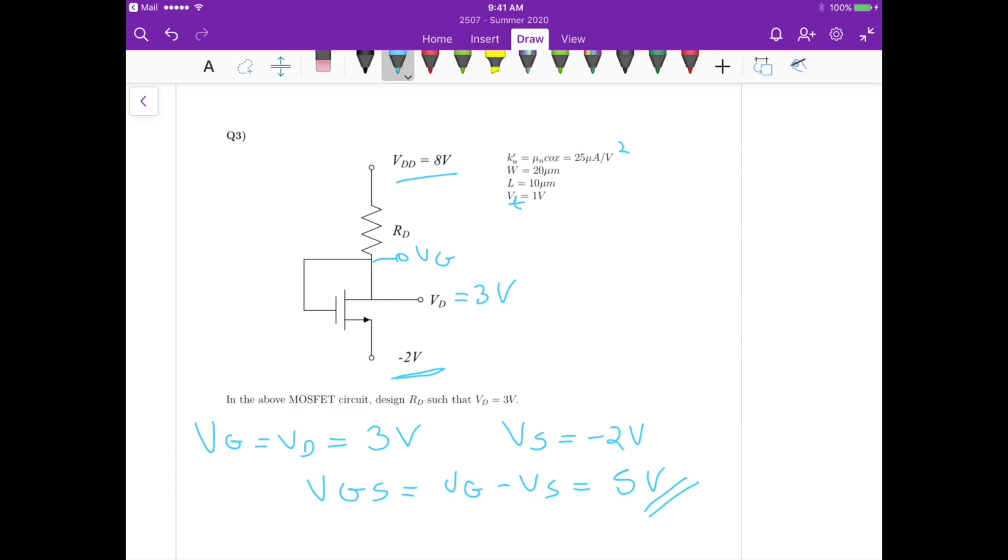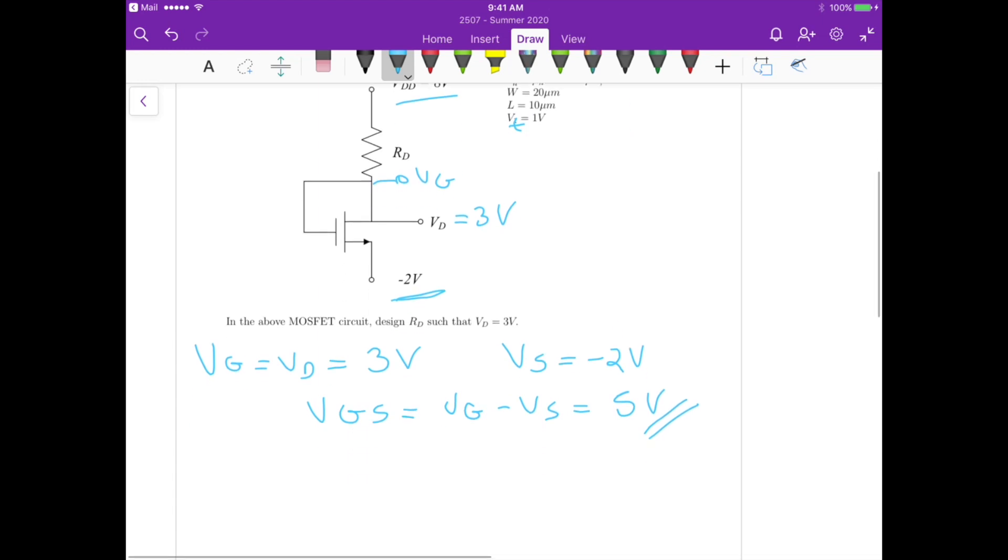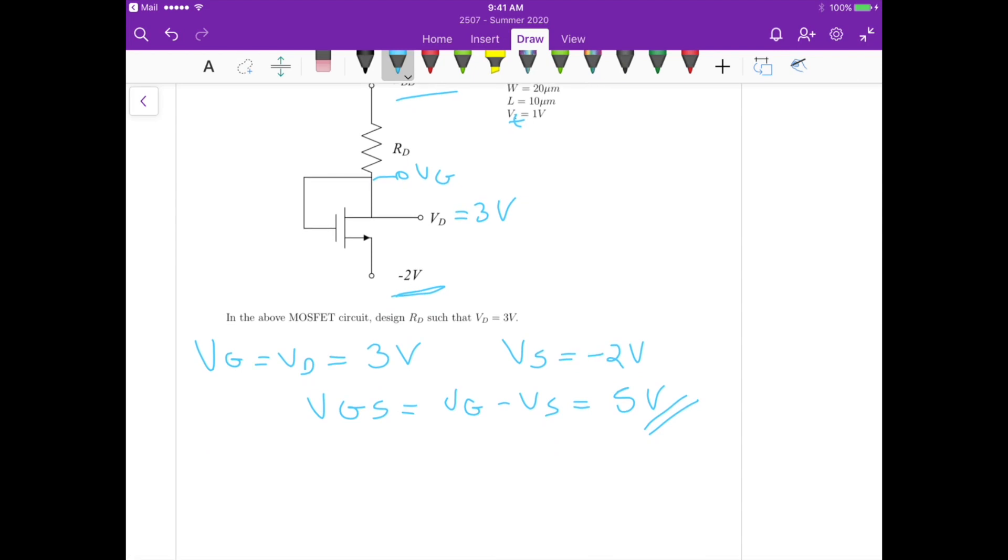Now if we assume that it's operating in the saturation mode, then we know that the current ID, it's going to be one half of the process transconductance, 25 microamperes per volt squared, times the ratio between the width, so in our case it's 20 micrometers, divided by the length which is 10 micrometers.